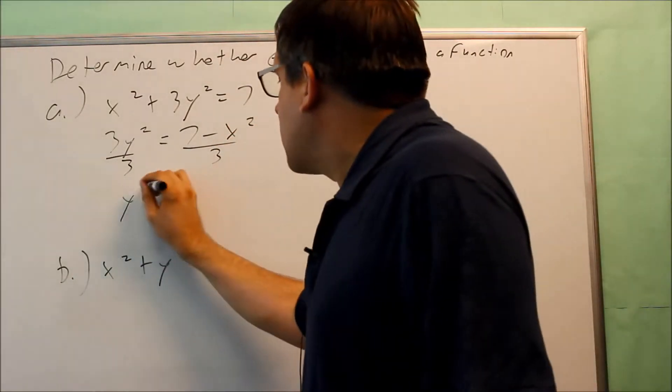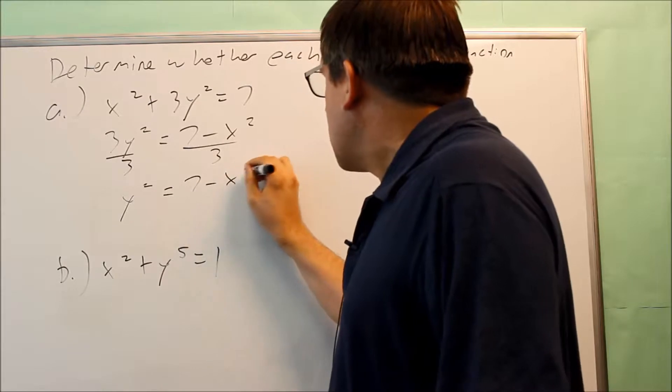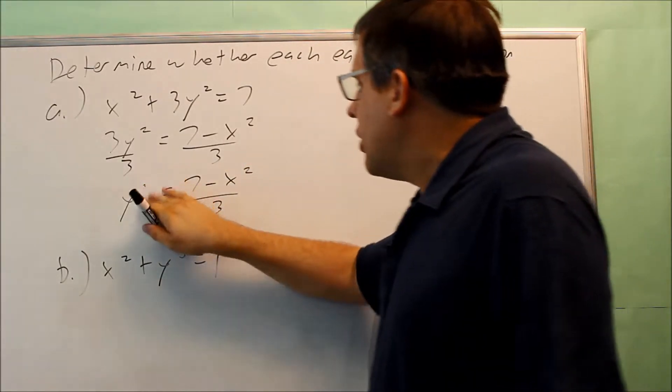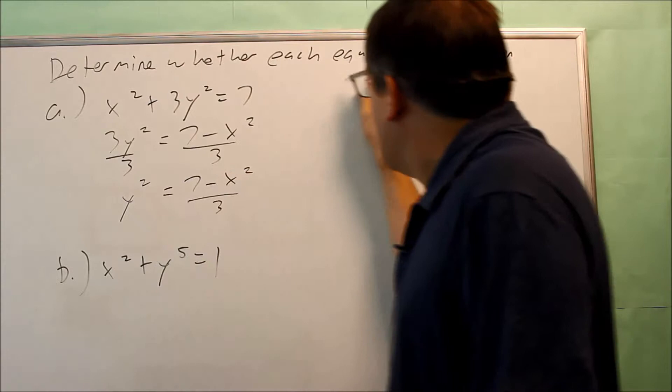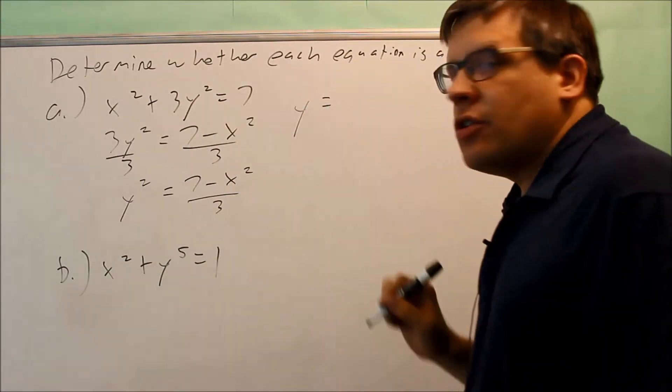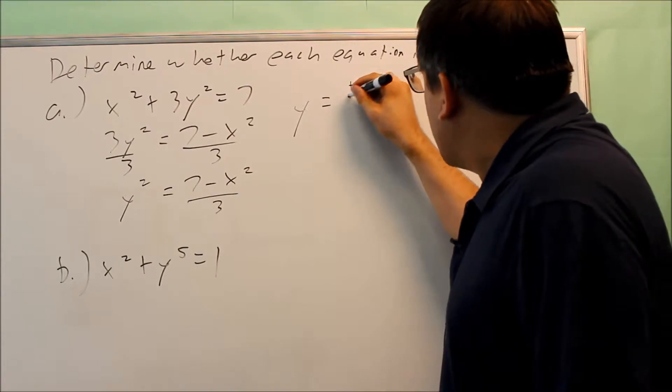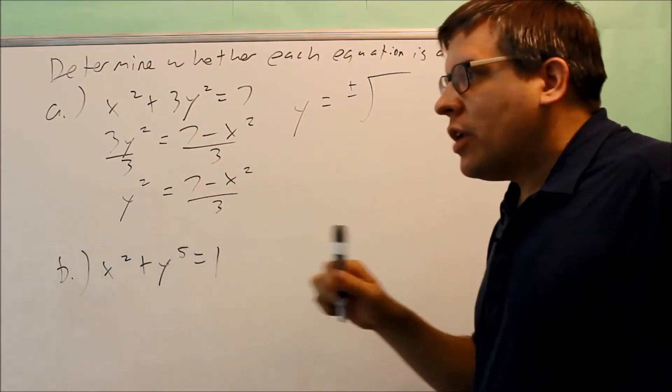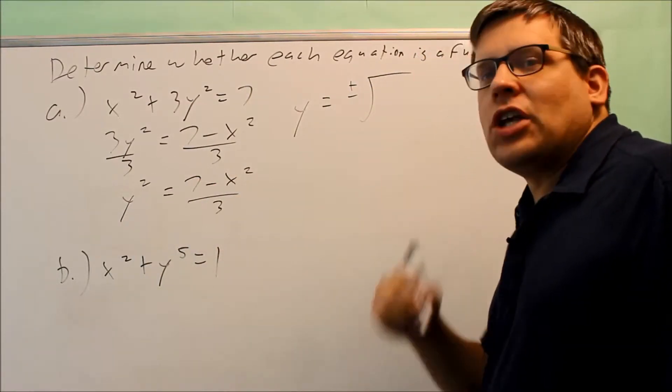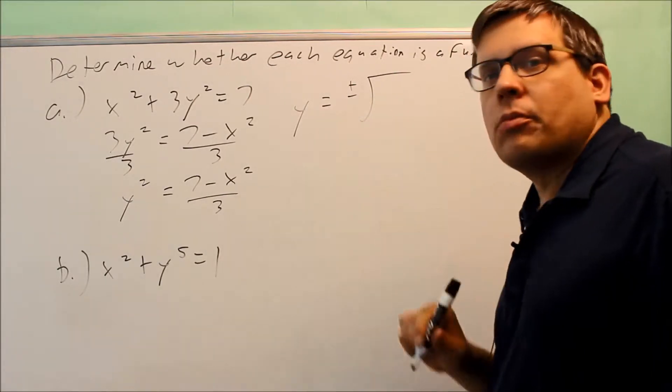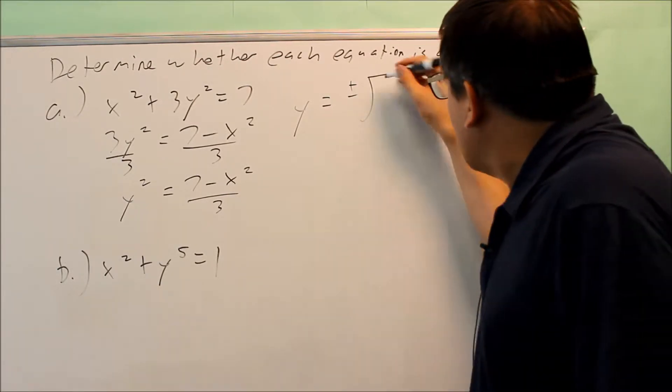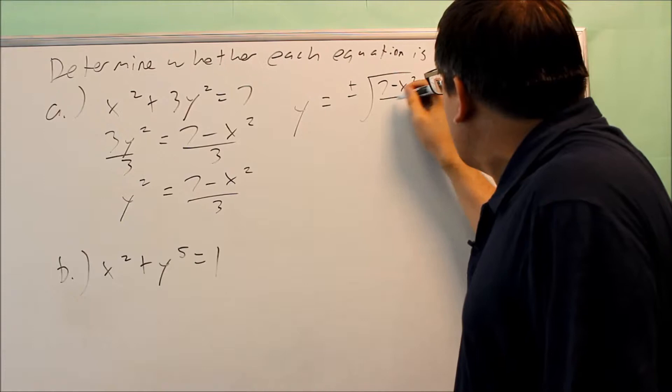I get y squared equals 7 minus x squared over 3, but we're not done yet because we need to solve that for y. You do that by taking the square root of both sides. Now when you take the square root, when you have an even power, taking an even root of something, you need to remember to put plus or minus signs in front of that.